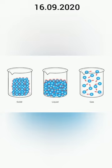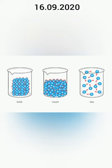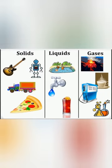Here you can once again see the molecular arrangement of solid, liquid and gas. Solids are tightly packed. Liquids are loosely packed, and gas molecules are very free to move. Here are examples: solids which are hard, like a guitar, robot, truck, and pizza slice. Liquids are watery in nature, like water, juices, etc. Gases are free to move — they can move from one place to another, in any direction, in a form of gas or steam.